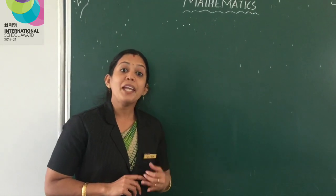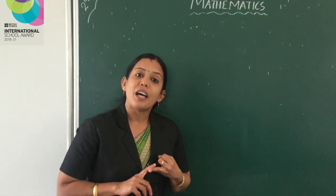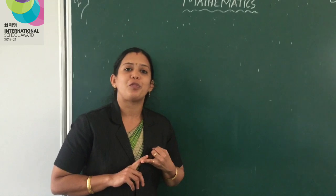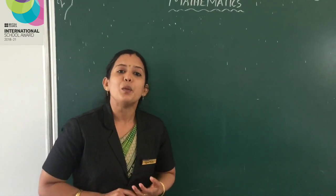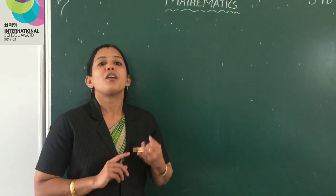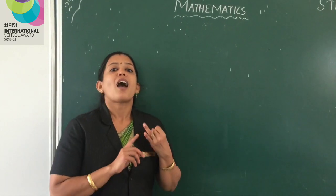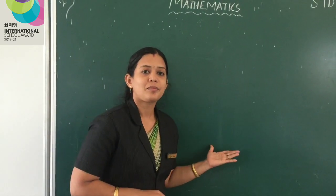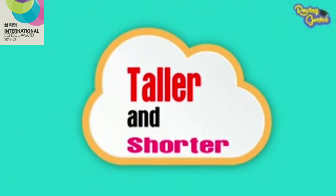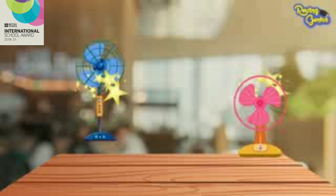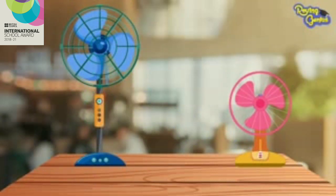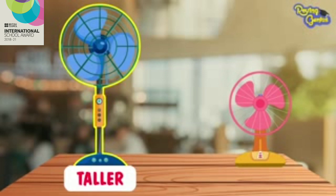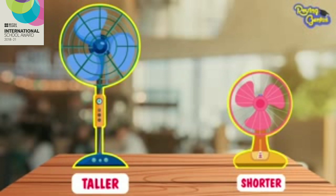When we compare the height of two objects, we use the terms taller and shorter. When we have two objects of unequal heights, we say that one object is taller and the other one is shorter.